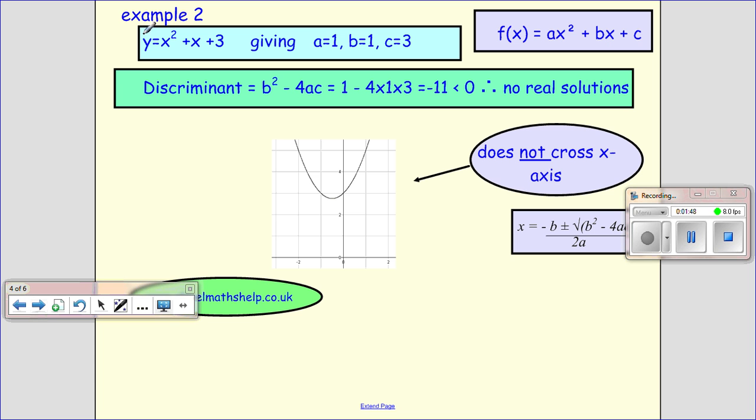Okay, so the second one, we've got y = x² + x + 3. Again, we compare it. We set out our a, b's, and c's. We slot them into our discriminant. We work it all out.